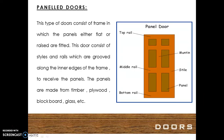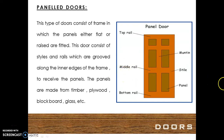Panel doors. This type of door consists of a frame in which the panels, either flat or raised, are fitted. This door consists of stiles and rails which are grooved along the inner edges of the frame to receive the panels. The panels are made from timber, plywood, blockboard, glass, etc.